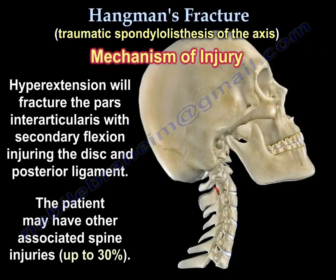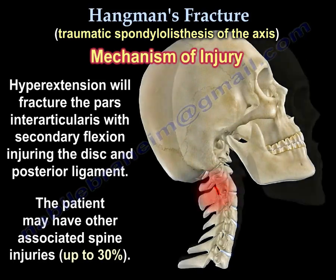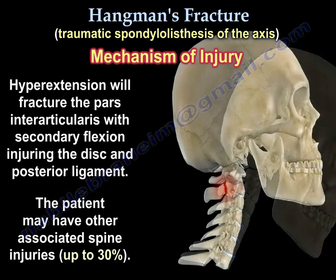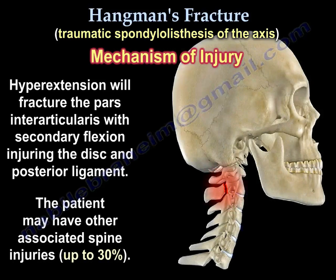Mechanism of injury: hyperextension will fracture the pars interarticularis, with secondary flexion injuring the disc and the posterior ligament. The patient may have other associated spine injuries in up to 30% of cases.